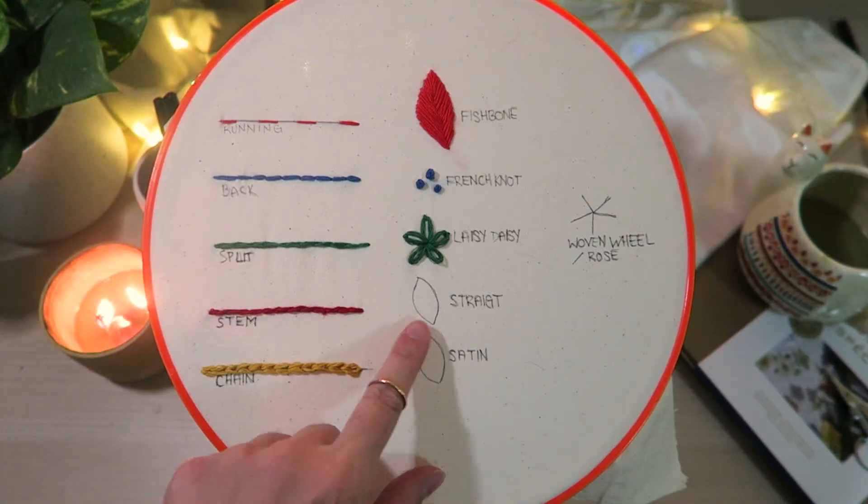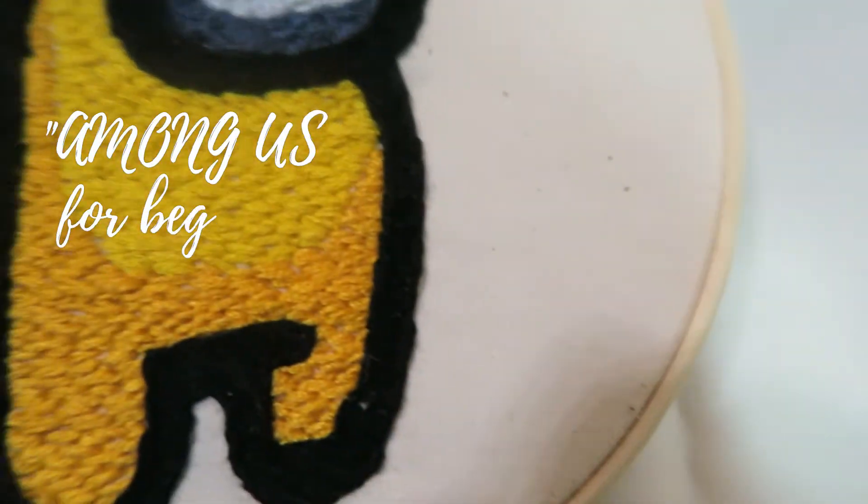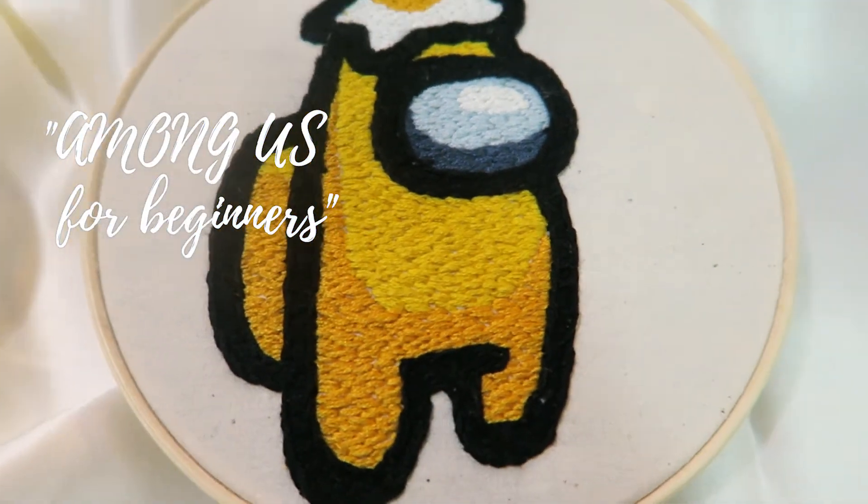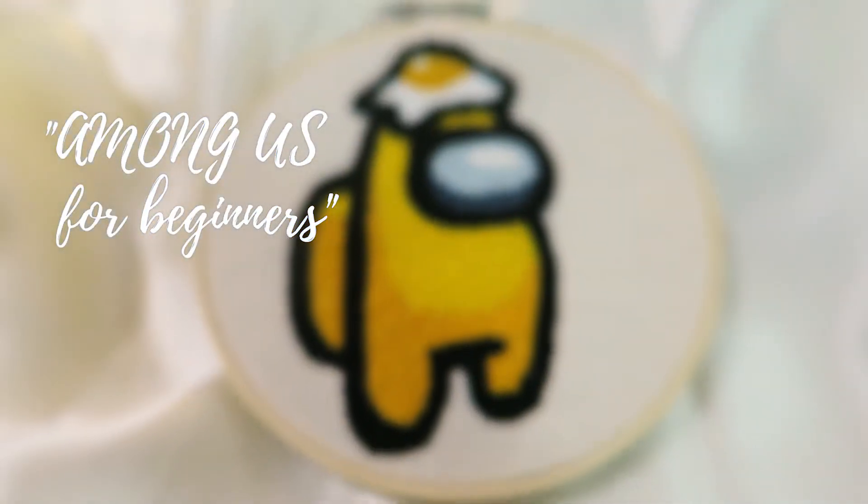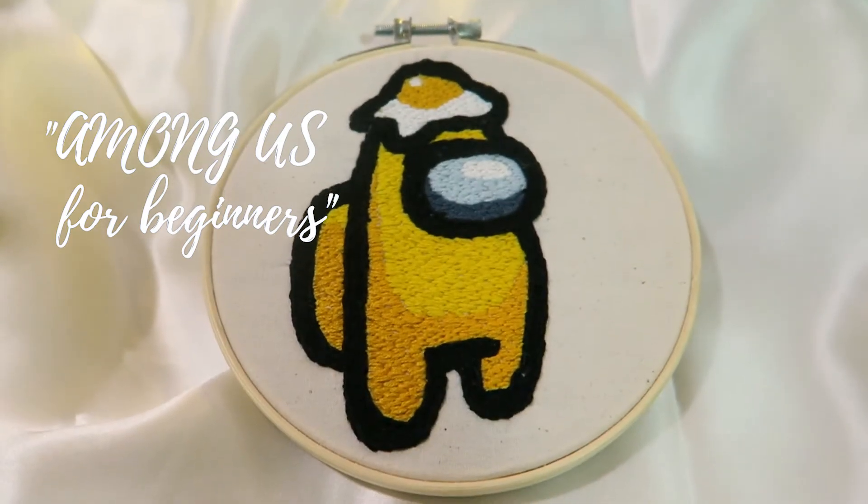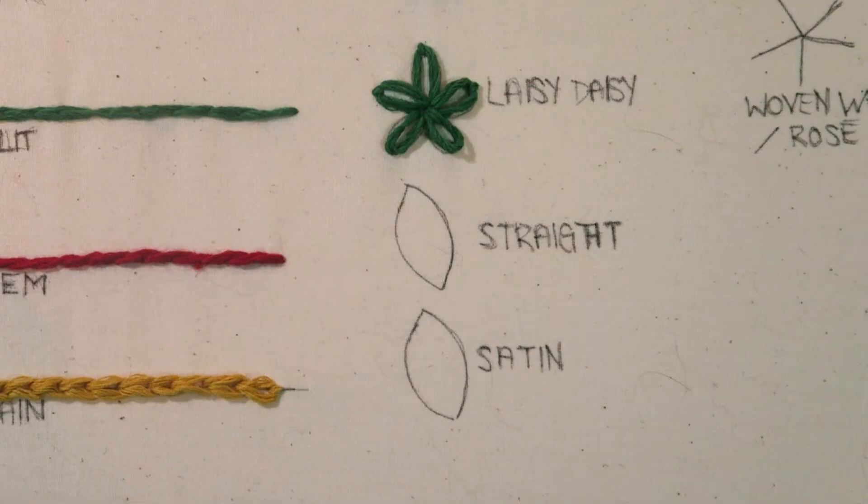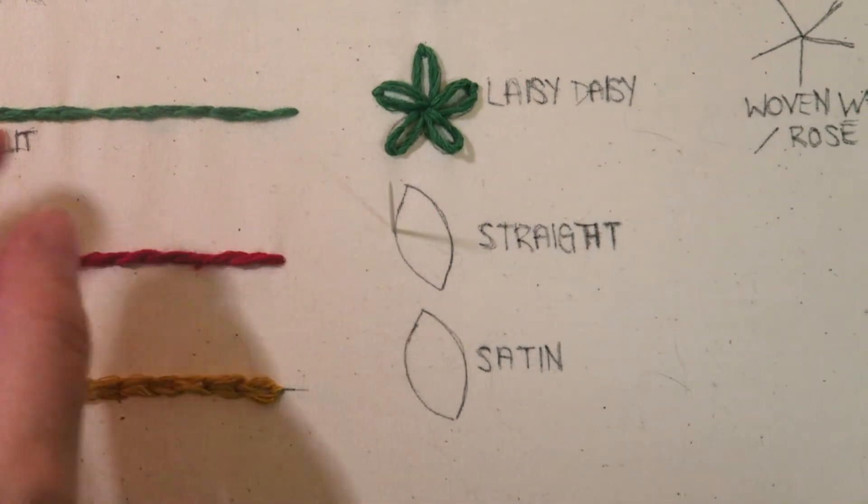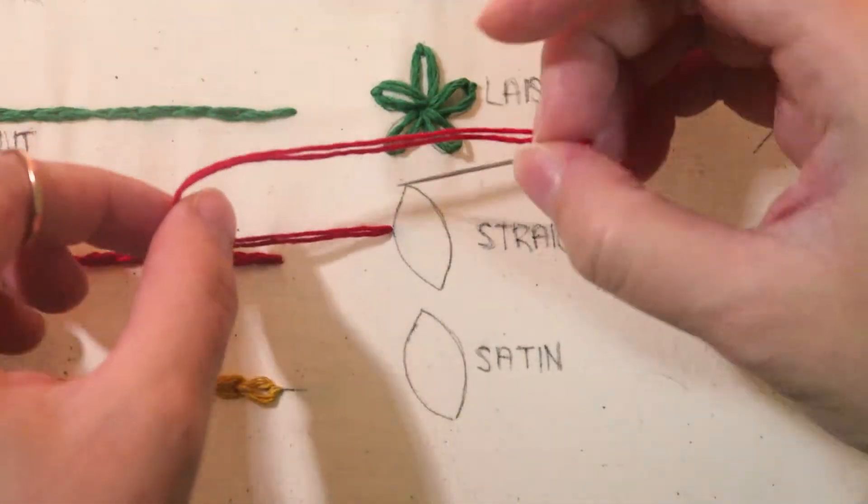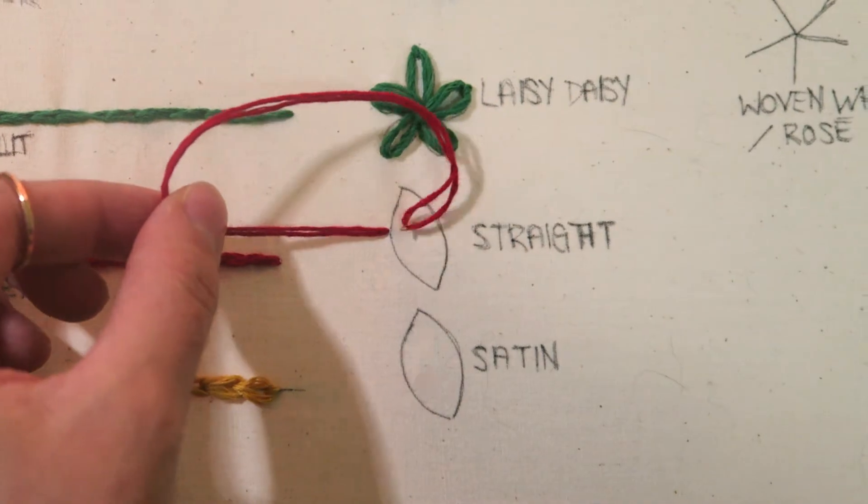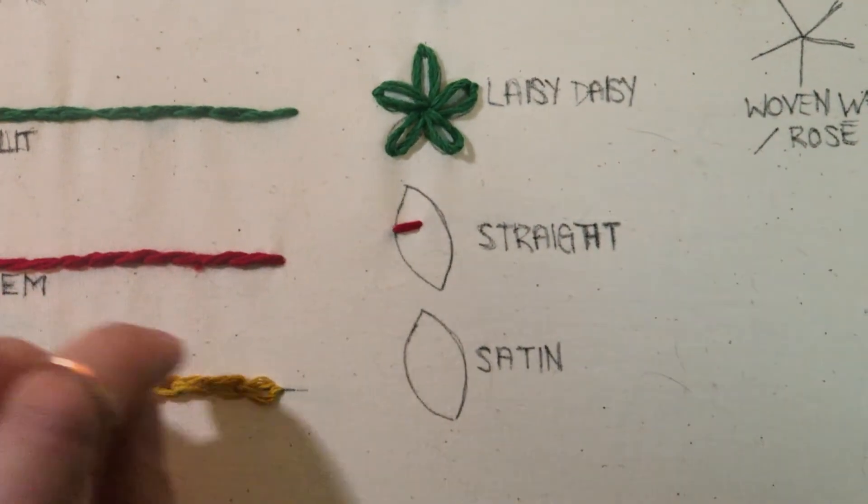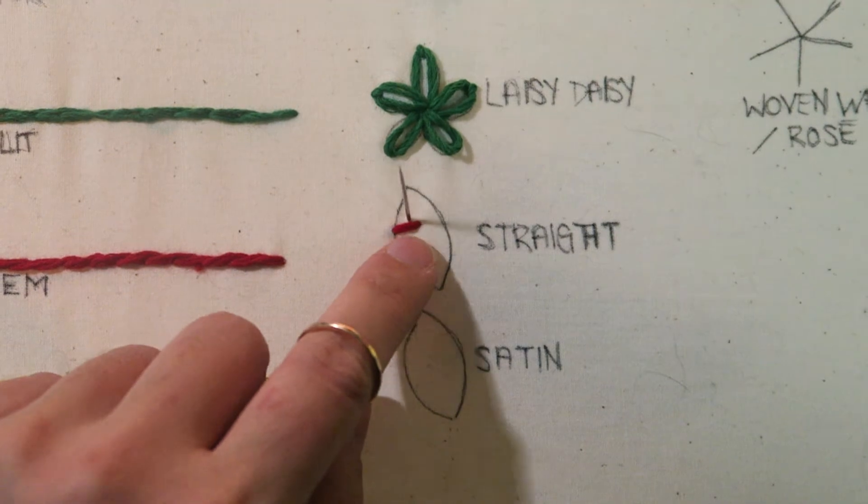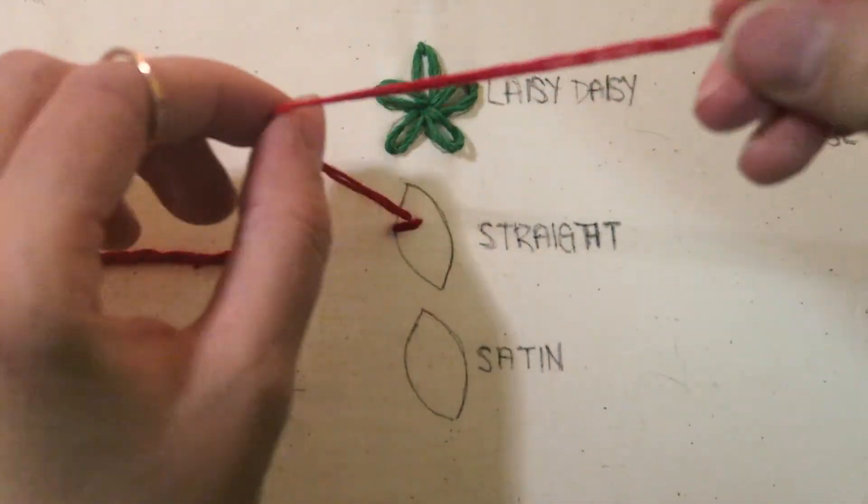The ninth stitch is the straight stitch and if you've watched my previous videos, you will know that this is the stitch I most commonly use. It is so easy and I really like how it gives a nice seamless look. The straight stitch is exactly how it's named. Start from the back of the hoop and pull your needle through to the front and you can create any size for the stitch length. Push your needle through to the back. So simple and I also like to stagger my straight stitches here.